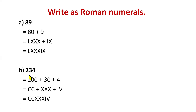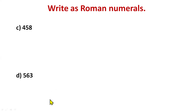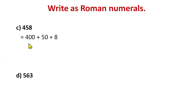Next question: 458. Decompose it: 400 + 50 + 8. For 400, we take help from D (500): 500−100 = CD. 50 is L, and 8 is VIII. So 458 is CDLVIII. Remember, for any number ending in 4, you always take help from the next unit of 5.